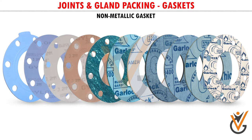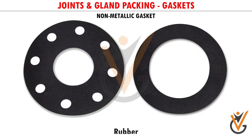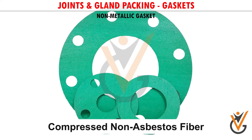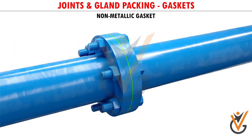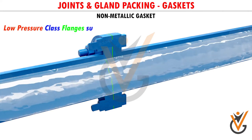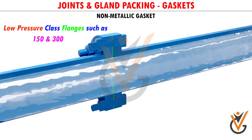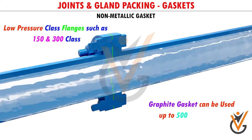Non-metallic gaskets. The most common materials used for this type of gasket are graphite, rubber, PTFE, and compressed non-asbestos fiber. These gaskets are also known as soft gaskets. Non-metallic gaskets can easily compress with low tension bolting. They are used with low pressure class flanges such as 150 and 300 class, and also in low temperature. However, graphite gaskets can be used up to 500 degrees centigrade.